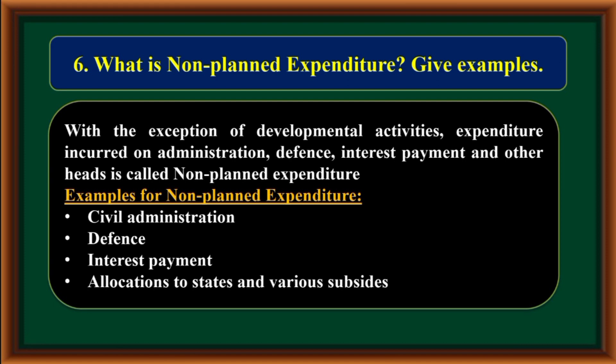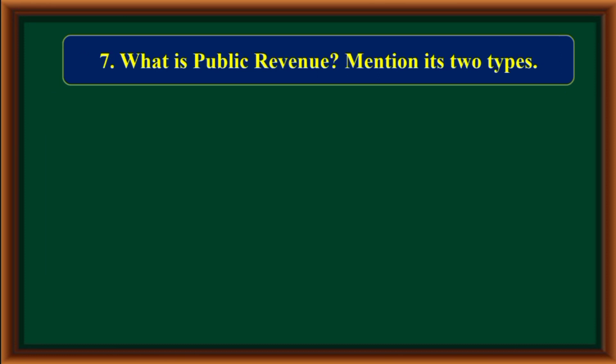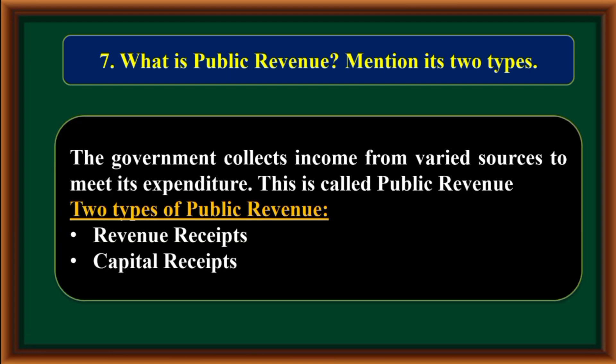What is public revenue? Mention its two types. The government collects income from varied sources to meet its expenditure. This is called public revenue. The two types of public revenue are revenue receipts and capital receipts.